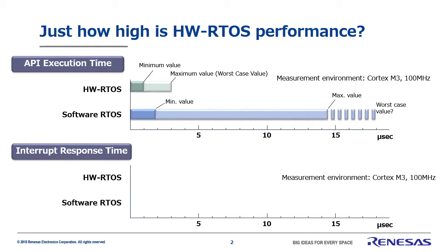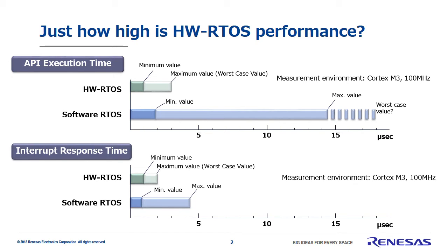Next, let's look at interrupt response time. Again, we're using a 100 megahertz Cortex-M3 and measuring with an in-house test program. For our hardware real-time OS, the minimum time was 1.0 microseconds and the maximum was 2.0 microseconds. For the software real-time OS, however, the minimum time was 0.84 microseconds and the maximum was 4.4 microseconds. Again, this maximum value only shows performance in the test environment, and we still don't know the worst case performance in other environments.